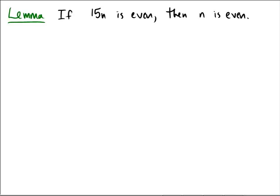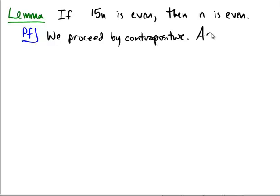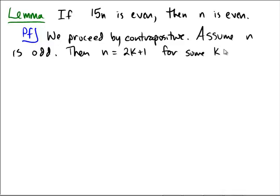As my discussion was working, I could see that I wanted to do this by contrapositive. So, my proof, I'm going to start off by saying proof. We proceed by contrapositive. So, if I'm going to do a contrapositive, this means I will have to assume the negation of the consequent. So, we will assume n is not even, but instead that it is odd.